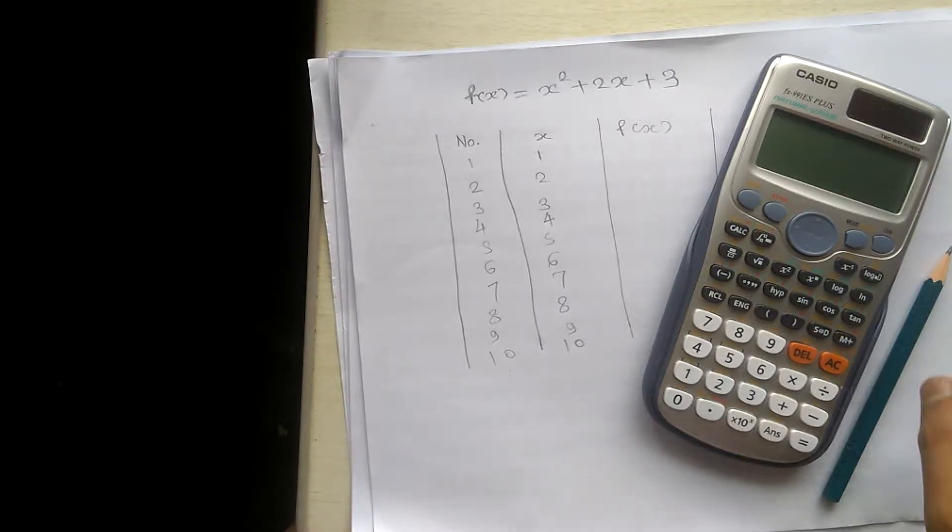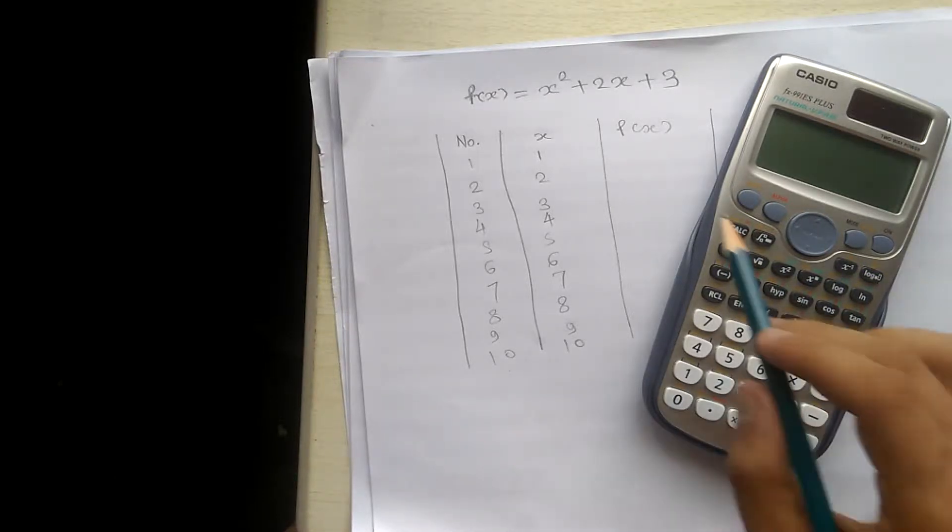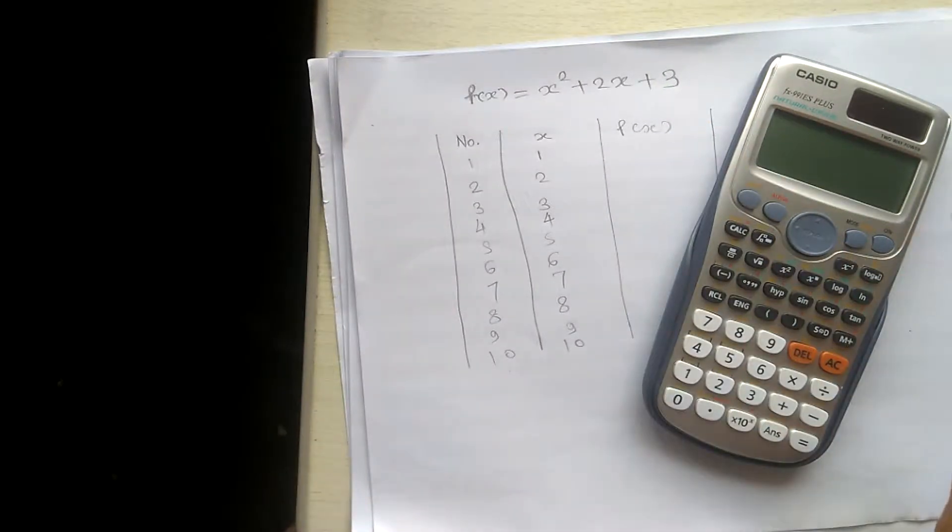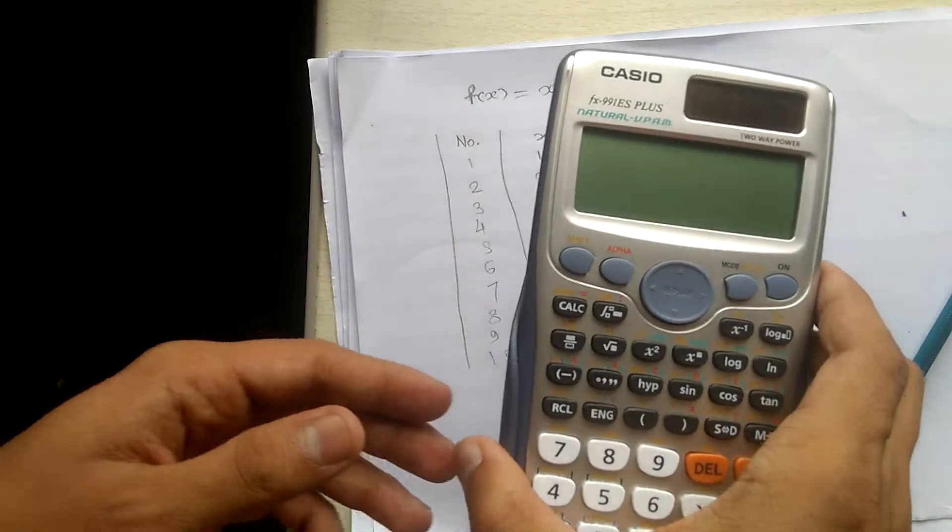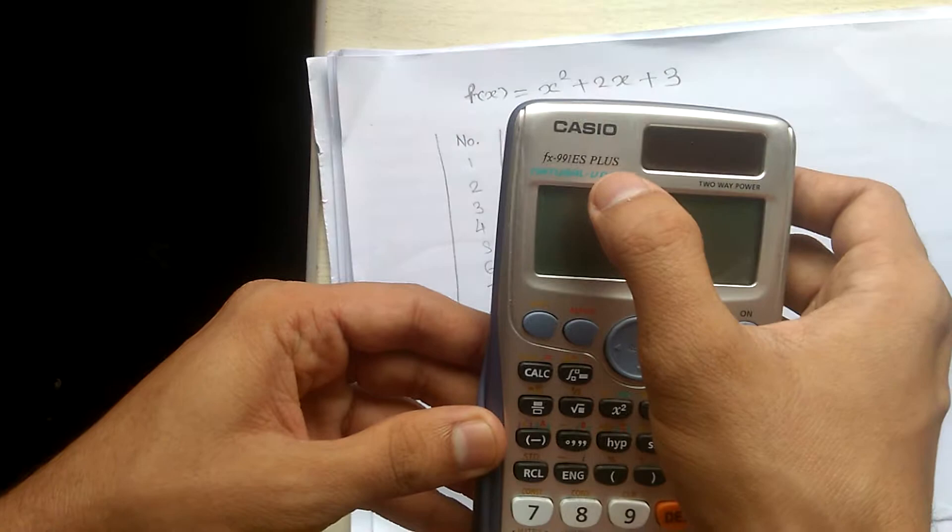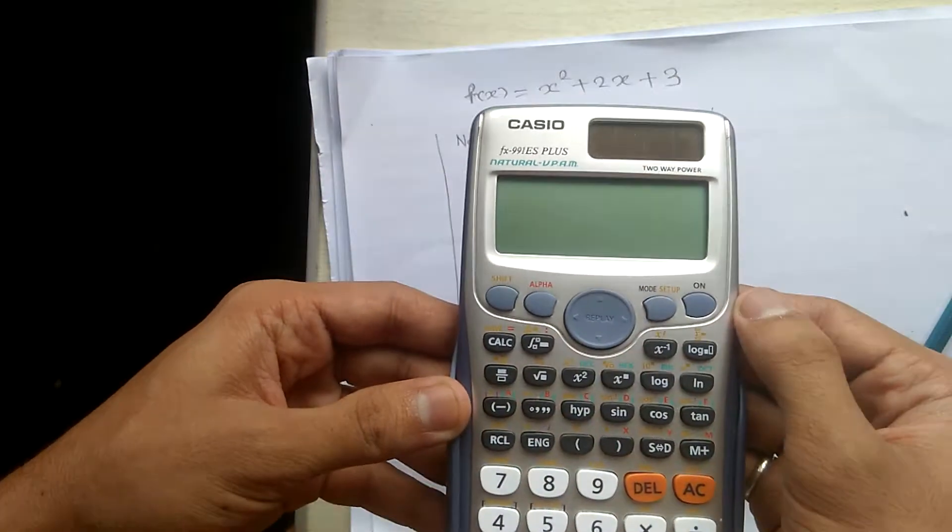Hi, hello, and welcome. Today we are going to see how to create a table of this equation by using this calculator. I have this calculator from Casio fx-991 ES Plus. So let's get started.